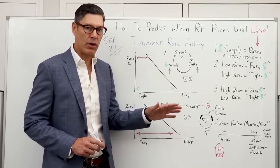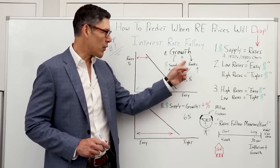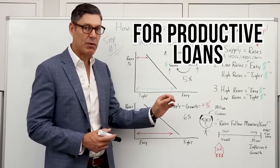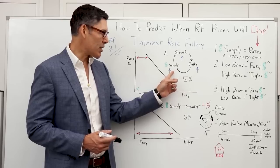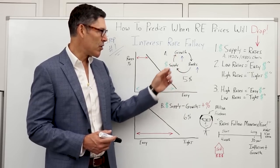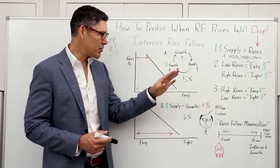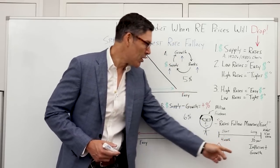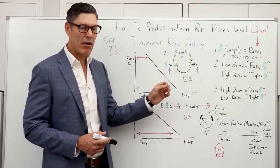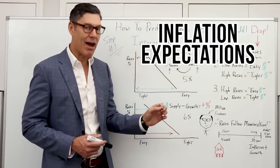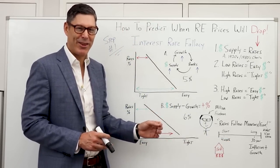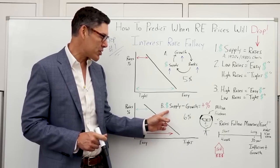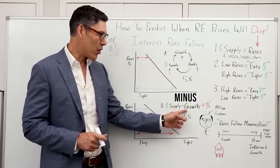In a normal environment where growth is steady or going up, banks will lend more because there's more opportunity for productive loans and likely more demand for those loans. The money supply goes up, allowing growth to continue expanding. In this normal environment, let's say interest rates are about 5% — growth and inflation would normalize interest rates around 4% to 5%. But we also have to include inflation expectations.